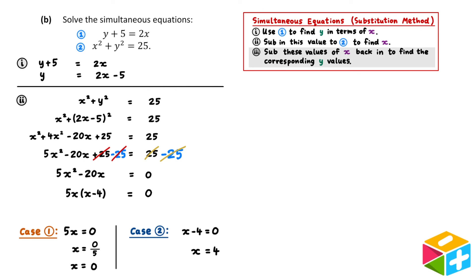The final step here is to sub these values of x back in to find the corresponding y values. We found earlier that y is equal to 2x minus 5. This equation can be used to find the y values when x equals zero and x equals 4.